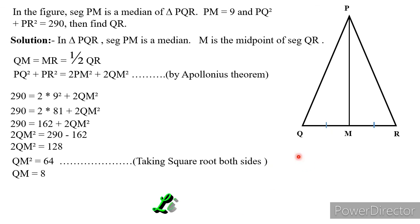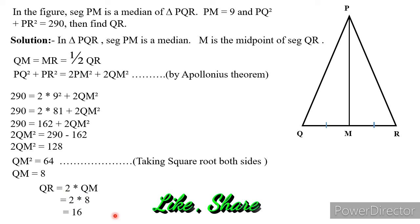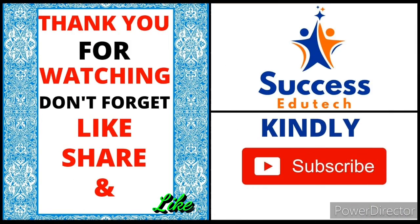Since QM = 8 and M is the midpoint of QR, we have QR = 2·QM = 2 × 8 = 16. I hope all doubts regarding these problems are clear. If you have any doubts, please comment in the comment section. Thank you for watching — don't forget to like, share and subscribe to our channel.